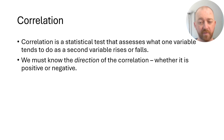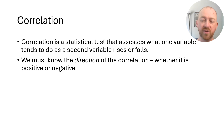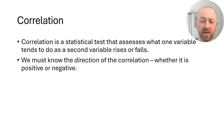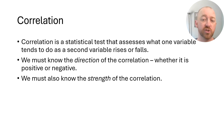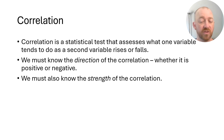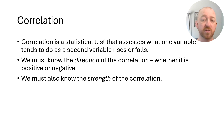Does it also go up? That would be a positive correlation. Or does it tend to go down when the other variable goes up? That's a negative correlation. Now the other thing we need to know is the strength of the relationship — generally, just how much the two variables appear to be associated with one another.